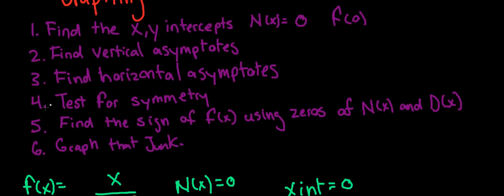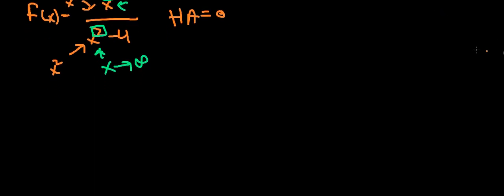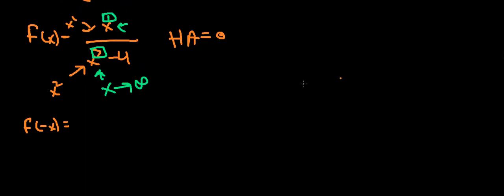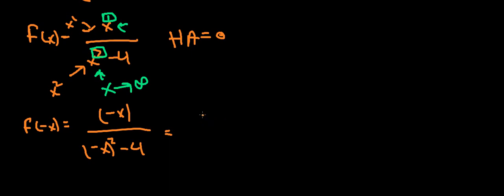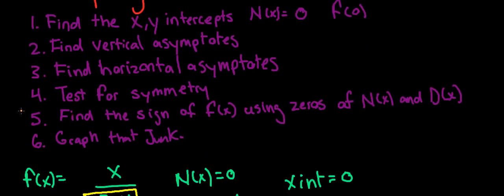Next we want to test for symmetry, because if there's symmetry, that's going to alleviate some of the workload. We test by substituting -x into the function: we get (-x) / ((-x)² - 4) = -x / (x² - 4). This gives us the negative of the original function, so we can pull out a -1 and get back our original function. That means f(-x) = -f(x), so this is an odd function.